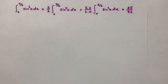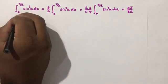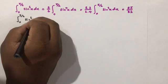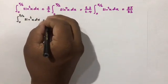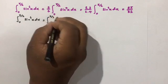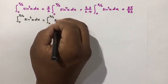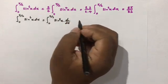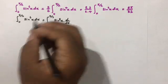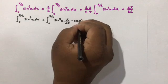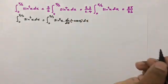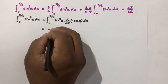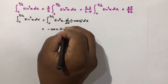First, I am going to take the integral from 0 to π/2 of sin⁶(x) dx and integrate by parts. I am going to take sin⁵(x) as the first function, and the next function is sin(x), whose integral is −cos(x) dx. So we get the product of these two functions: −cos(x) · sin⁵(x).